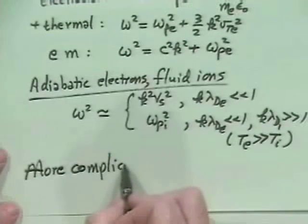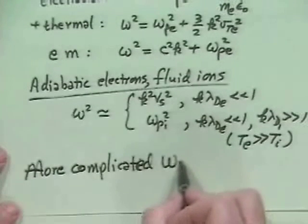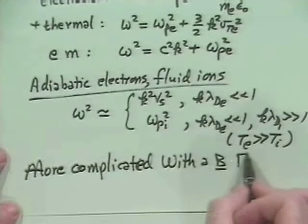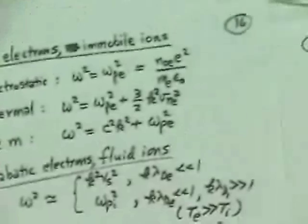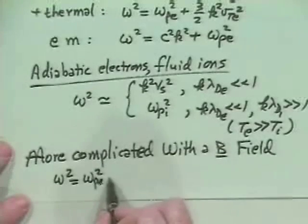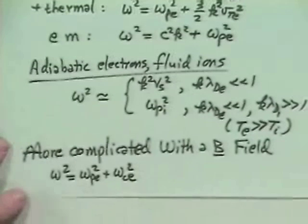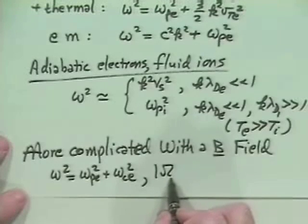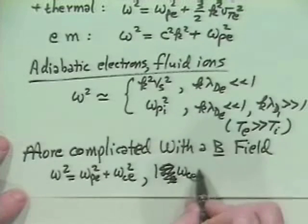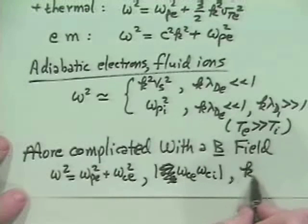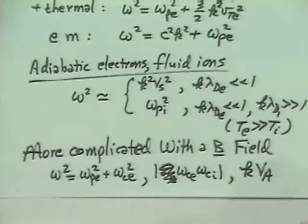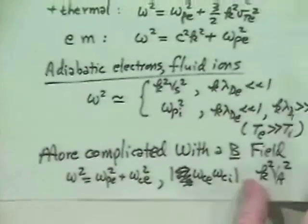And then perhaps I should just go back here to say more complicated with a magnetic field. Namely, let me just put that down here. Namely, you get omega squared is equal to omega p e squared plus omega c e squared. That's the so-called upper hybrid wave, or the intermediate lower hybrid wave, omega c e, omega c i, or alternatively, you get k v alphane for the Alfvén speeds. OK, the final thing we talked about was basically transport.